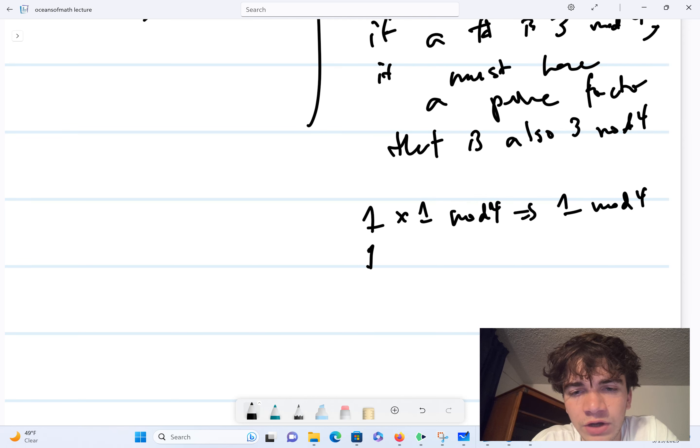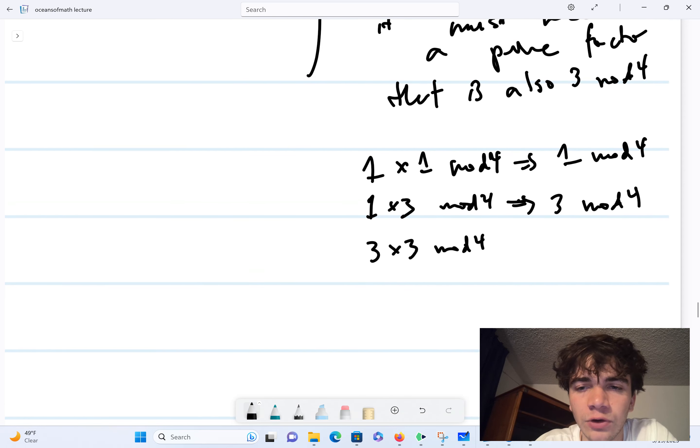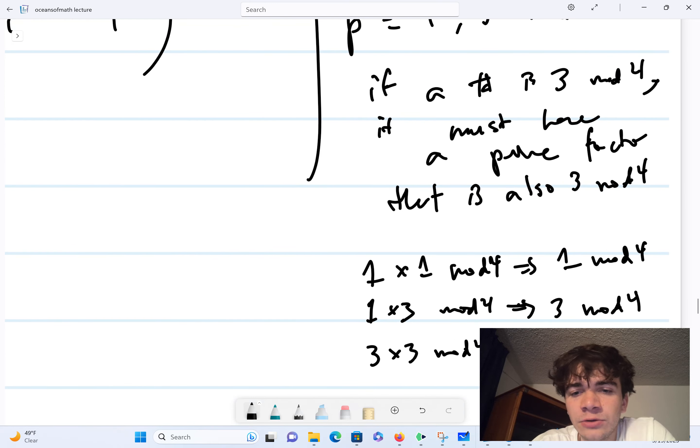So, and then if I look at 1 times 3 mod 4, this is equal to 3 mod 4. And then if I look at 3 times 3 mod 4, well, 3 times 3 is 9, and I'm going to reduce that modulo of 4. So subtract 8, and I get 3 times 3 mod 4 is equivalent to 1 mod 4.